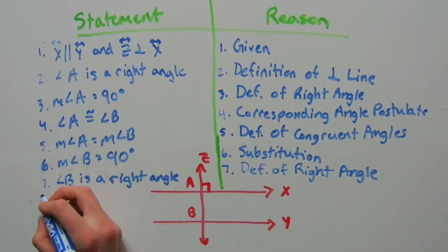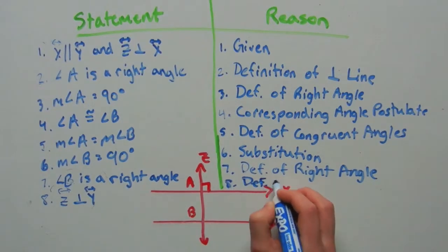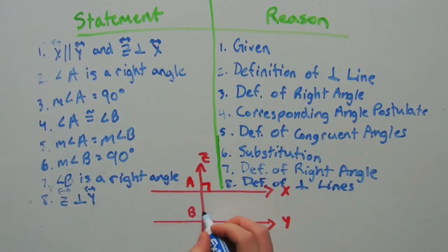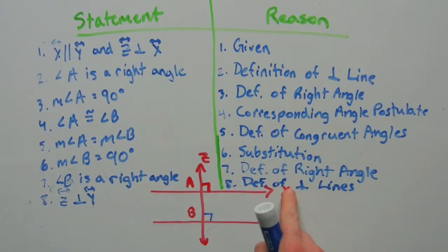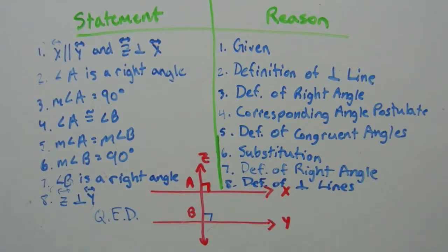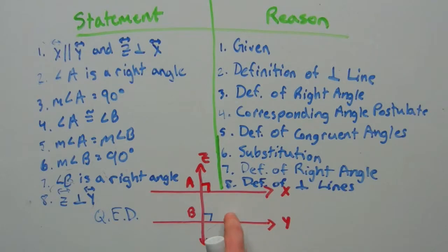And finally, our last step: line Z is perpendicular to line Y, and that's by the definition of parallel lines. Now we have proven what we wanted to prove — that if a line is perpendicular to one of two parallel lines, then it is perpendicular to the other line.